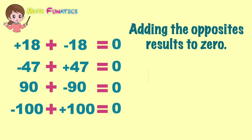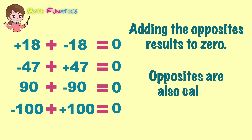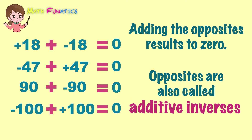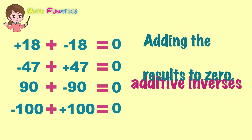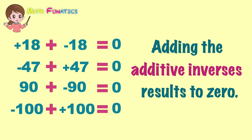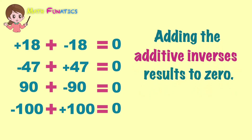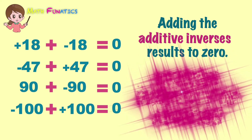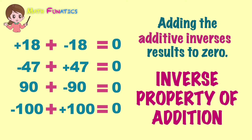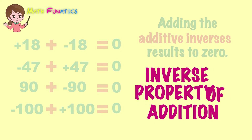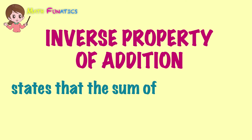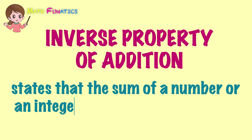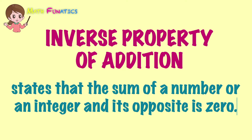In fact, there is another term that we can use for opposites of integers, and that is additive inverses. In effect, we can say that adding the additive inverses results to 0, and this shows the inverse property of addition of integers. The inverse property of addition states that the sum of a number or an integer and its opposite is 0.